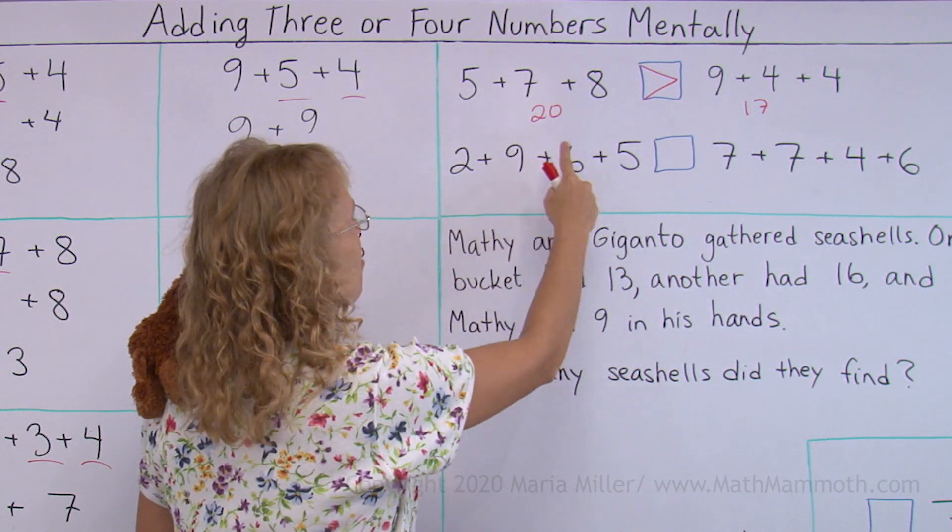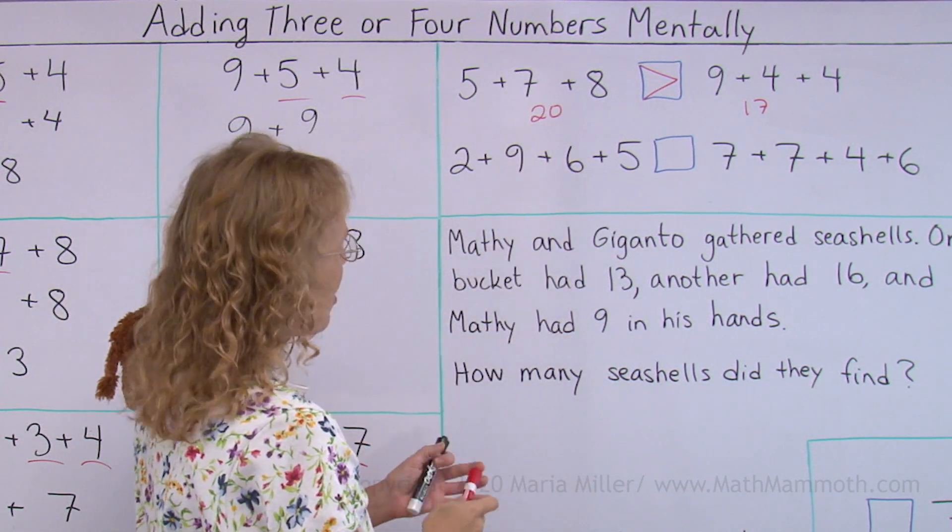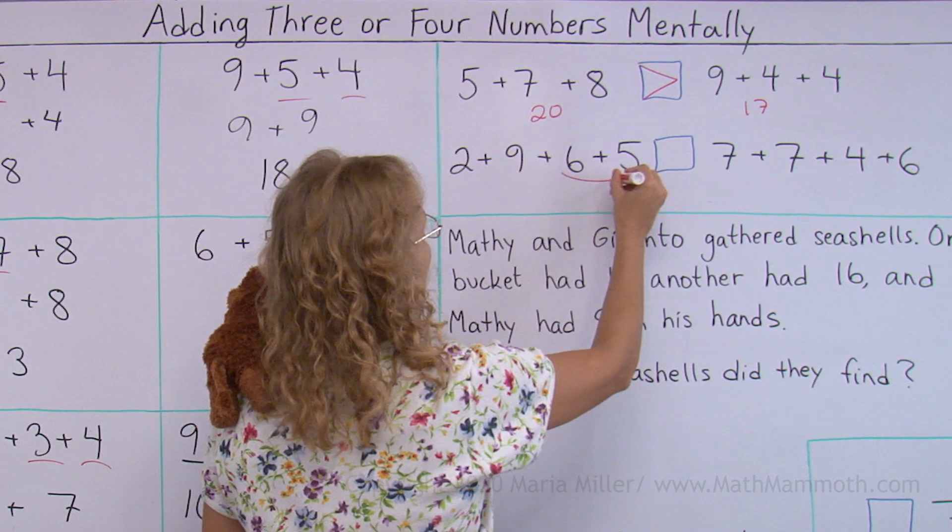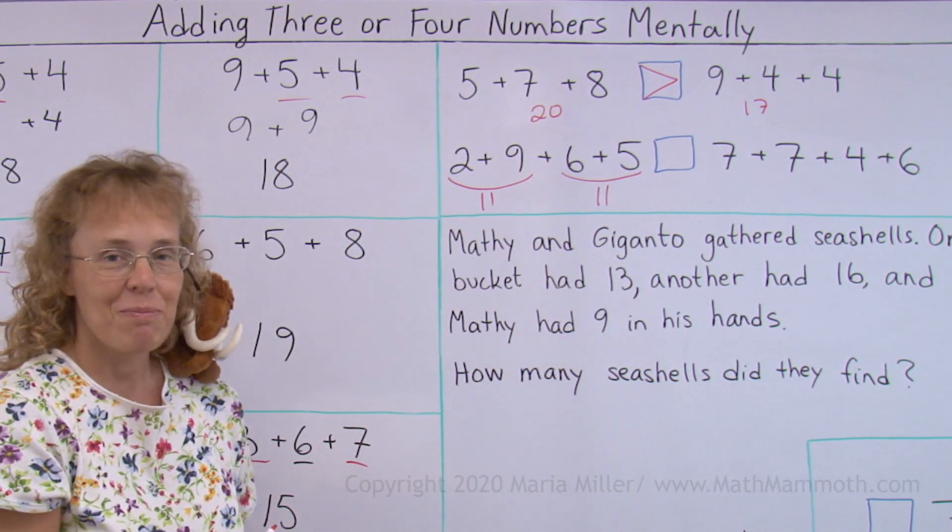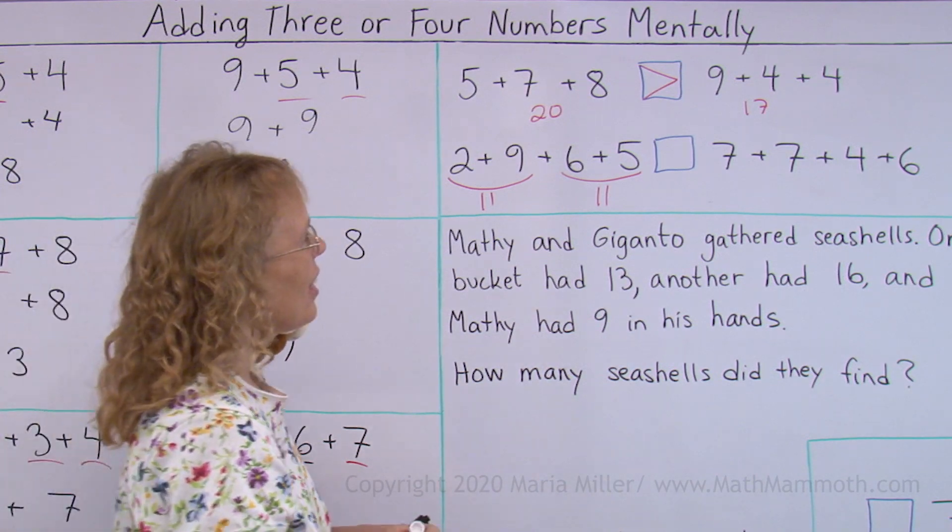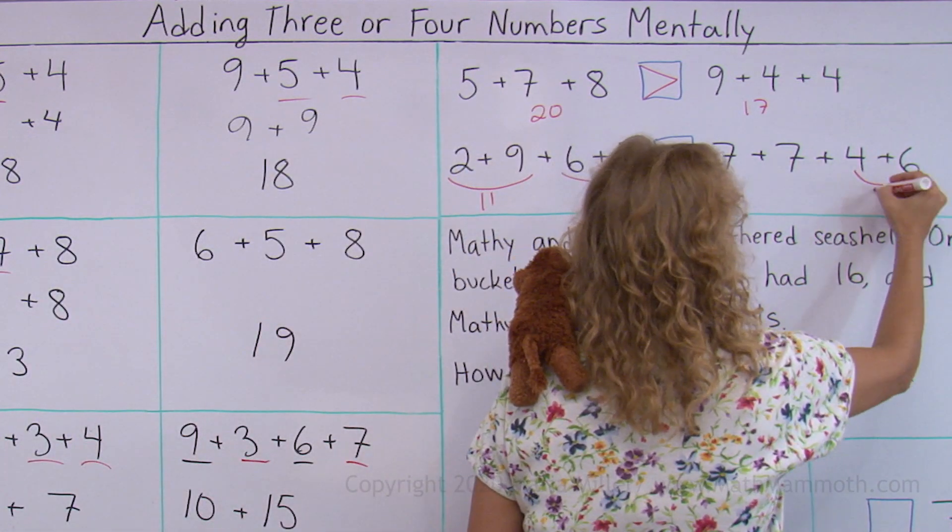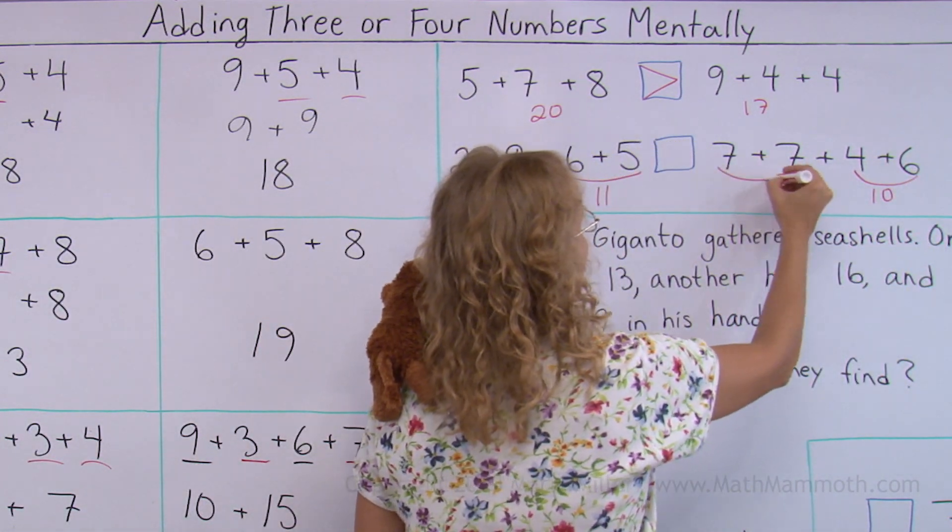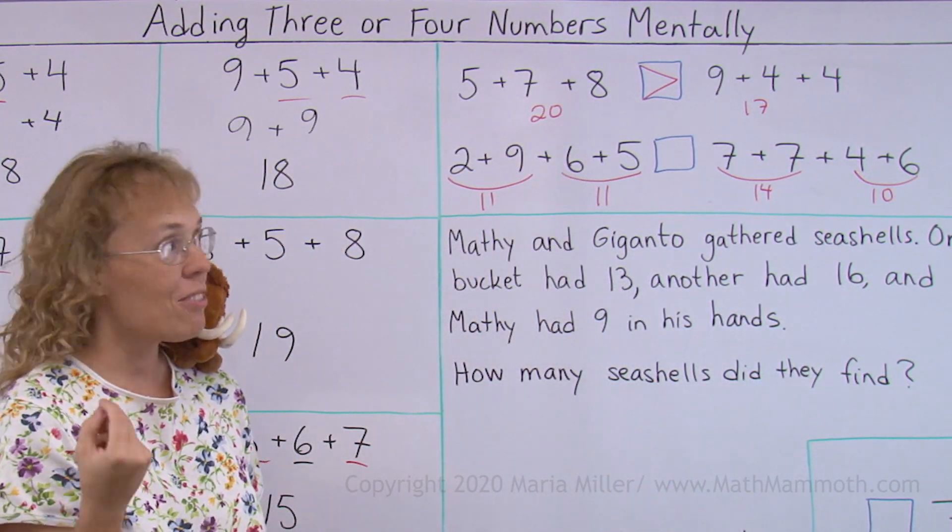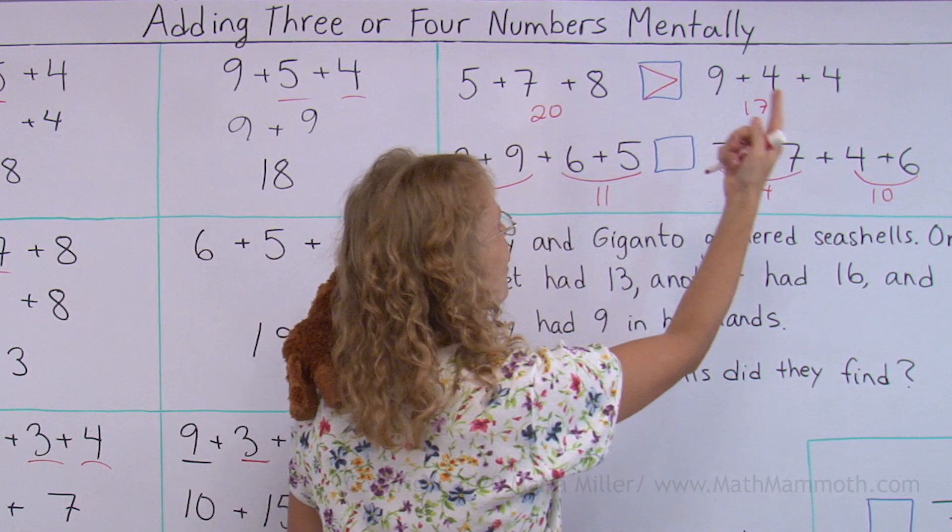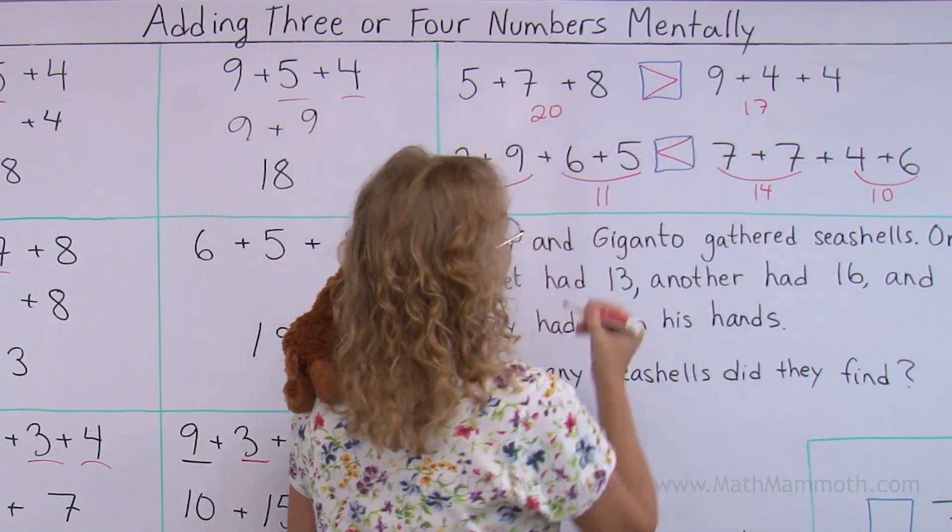And then 2 plus 9 plus 6 plus 5. Okay. 6 and 5 makes 11. This one also makes 11. So I have 2 elevenths, 22. Then over here, this makes 10. This makes 14. 14 and 10 is 24. So 22 here, 24 there. 24 is greater.